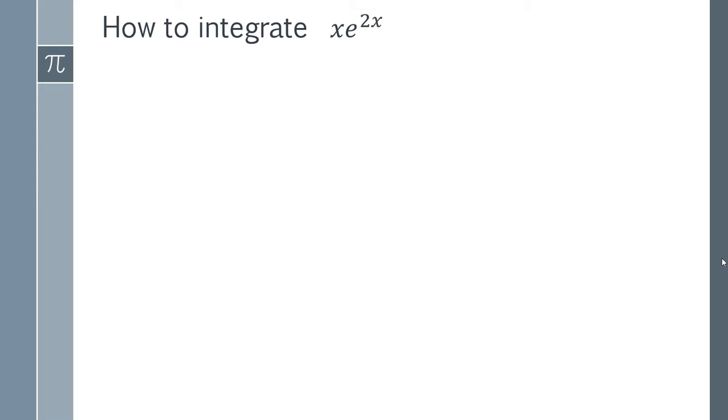In this video I'm going to run through the integration of x times e to the 2x. So we've got our integral here, and the first thing you have to realize is we've got two different functions times each other. We've got x times e to the 2x, and where we have two functions multiplied together, the good trick that we can usually use to solve these sort of problems is to use integration by parts.